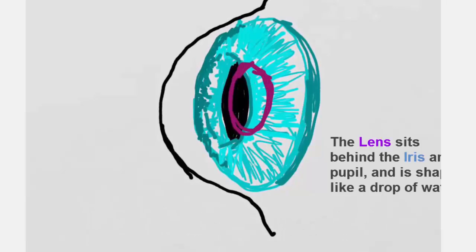The lens sits directly behind the iris and pupil. It's shaped sort of like a drop of water.